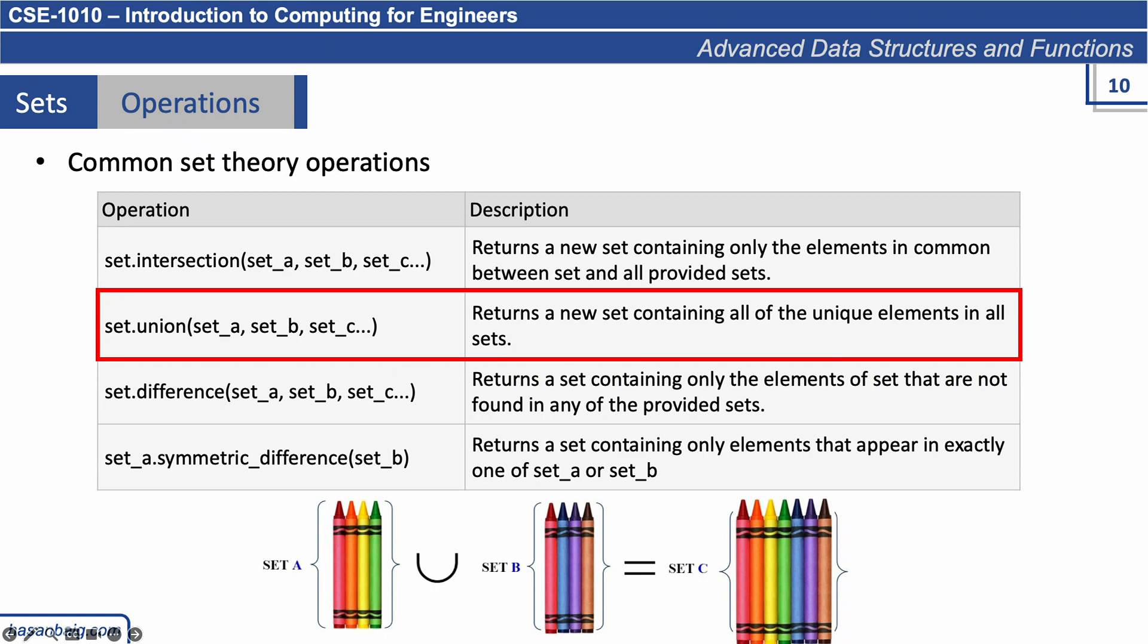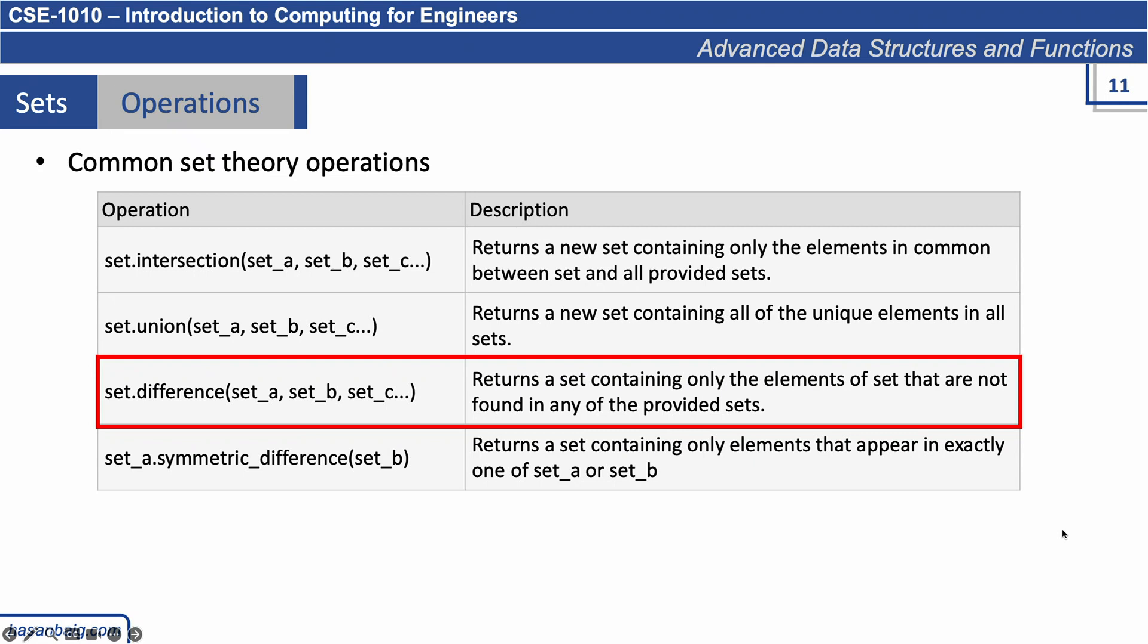The difference operation returns a set containing only the elements of a set that are not found in any of the provided sets. For example, to calculate the difference of set1 and set2, you can calculate the difference with multiple sets. In this example, set1 minus set2 will give the elements which are not present in set2.